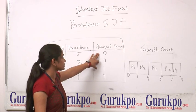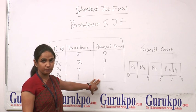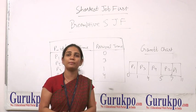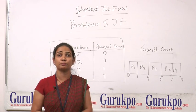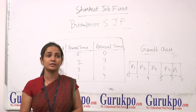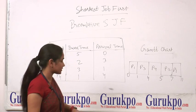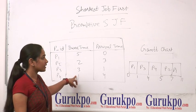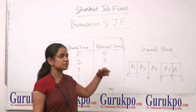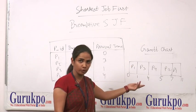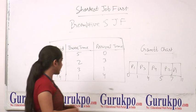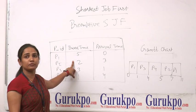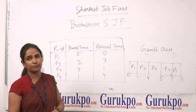At this point, all processes have arrived in the ready queue. Now the processor will be allocated to the process with the shortest burst time. The P4 process has the shortest burst time, so the processor will be allocated to P4 first, then P2, and finally the remaining portion of P1 will be allocated last.